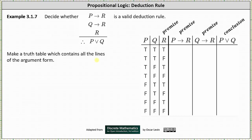The argument contains the variables p, q, and r, which are the first three columns. Because we have three variables, it takes eight rows for all the possible permutations of true and false. Next we have a column for if p then r, a column for if q then r, we already have a column for r, and then a column for p or q. Notice how I've labeled the premises and the conclusion.